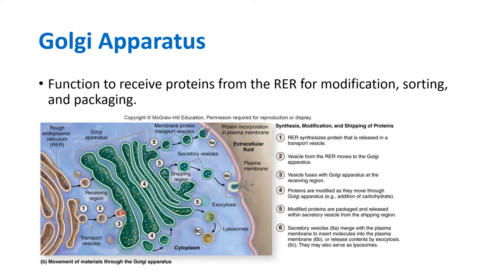Think of the Golgi apparatus as the post office: it accepts your package, stores it, and then tags it with its final destination. The Golgi apparatus accepts the proteins from the rough endoplasmic reticulum, can store them, and then ships them out. Before shipping, it tags the proteins so they will go to their correct final destination.